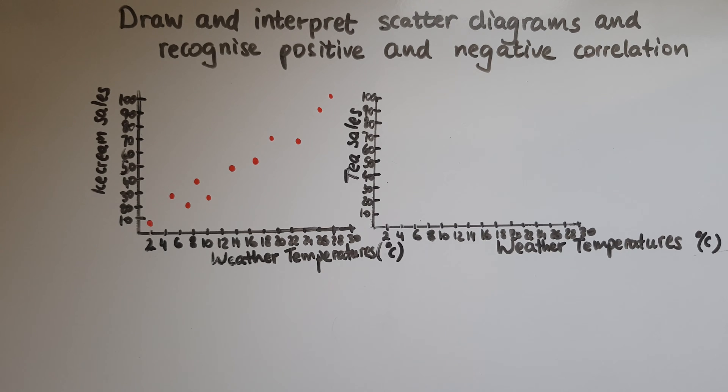So what you can see is that when temperatures increase so do the ice cream sales. So as we said when temperatures were about 2 degrees Celsius that was matched with ice cream sales of under 10, so very few sales.